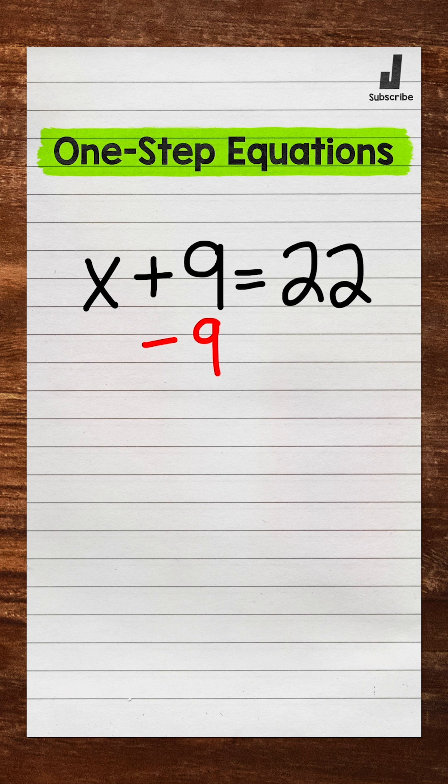Whatever we do to one side, we must do to the other in order to keep the equation balanced, so subtract 9 from the right side as well. The 9s on the left side cancel each other out, so x is now isolated.